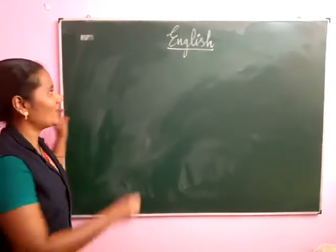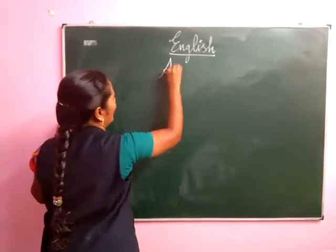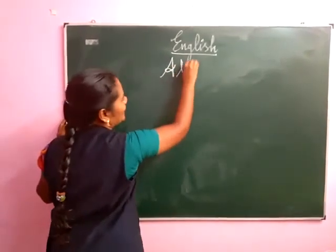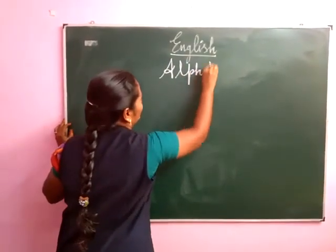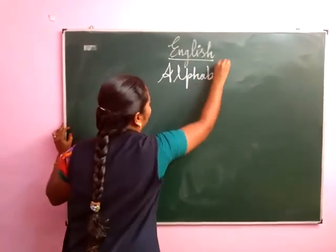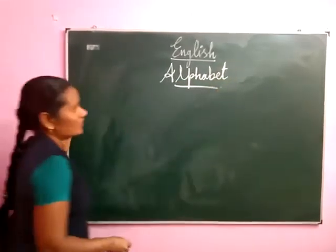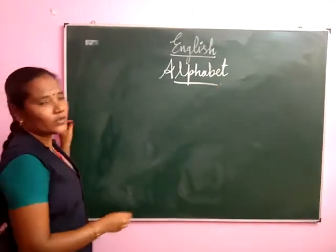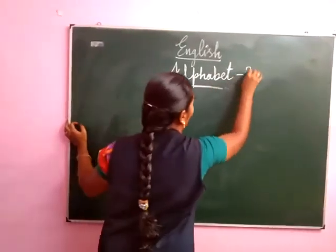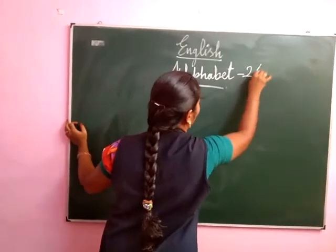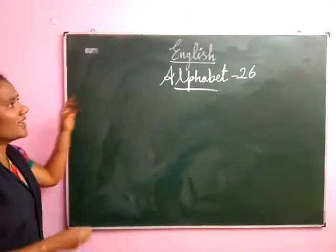Okay, now alphabets. How many letters in the alphabet? Do you know? 26 letters. Very good. How many letters? 26 letters.